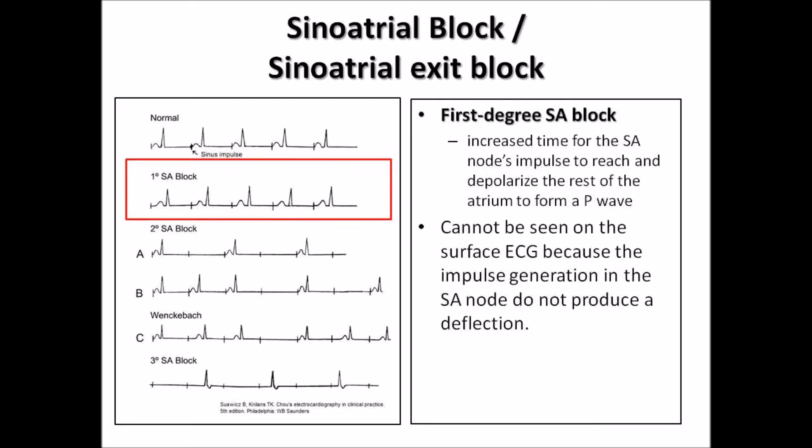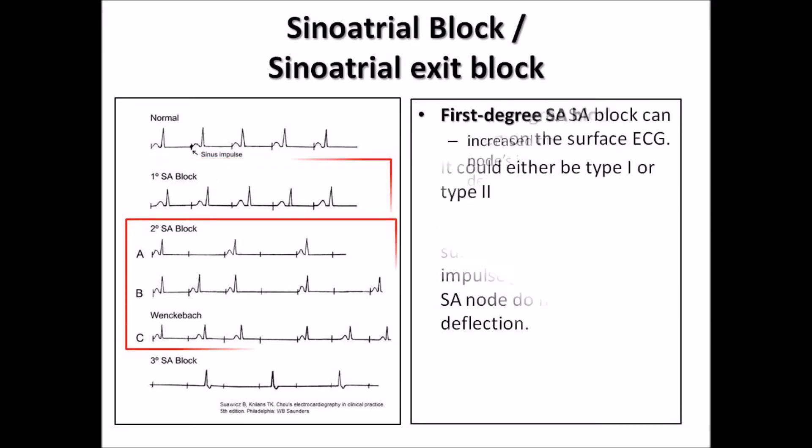First degree SA block represents an increased time for the SA node's impulse to reach and depolarize the rest of the atrium to form a P wave. It cannot be seen on the surface EKG because the impulse generation in the SA node does not produce a deflection.